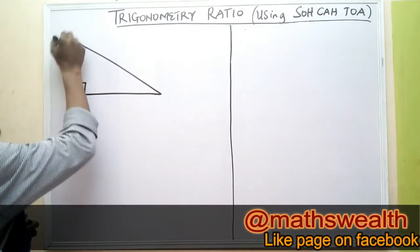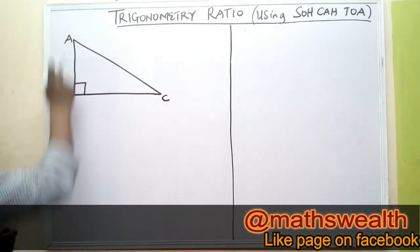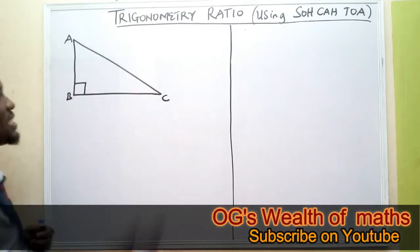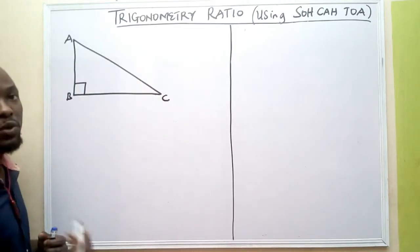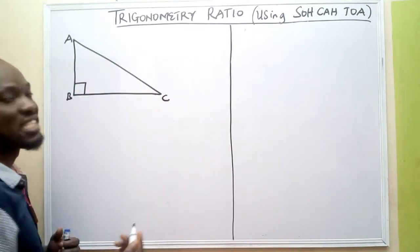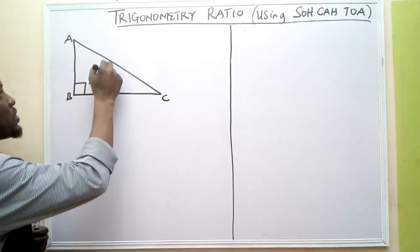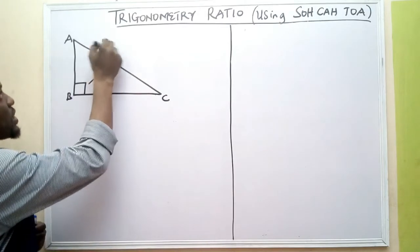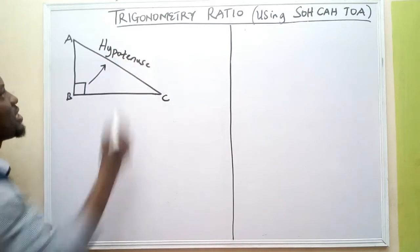SOHCAHTOA is an acronym. Let's say I have a triangle with sides AB, BC, and AC. If you look at this triangle, the longest side is AC, which is called the hypotenuse. The hypotenuse is the side facing the right angle.